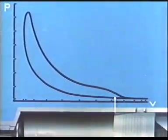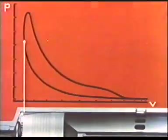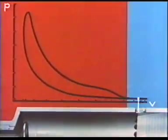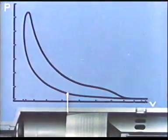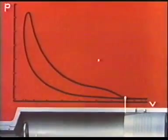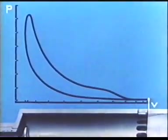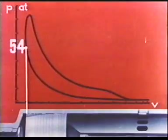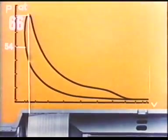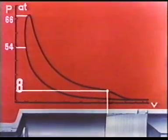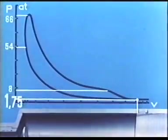Scavenging, compression, combustion, expansion, exhaust and back to scavenging. The characteristic pressures are approximately a compression pressure of 54 kilograms per square centimeter, maximum pressure 66, exhaust pressure 8 and scavenger air pressure 1.75 kilograms per square centimeter.